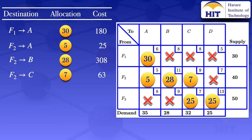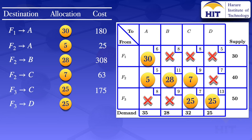F3 to C: 25 units at a unit cost of 7, so the cost is 25 times 7, which gives us 175. And lastly, F3 to D: we are allocating 25 units at a unit cost of 13, so the total cost there is 25 times 13, which gives us 325. Then we add all those costs and get the total cost of 1076.